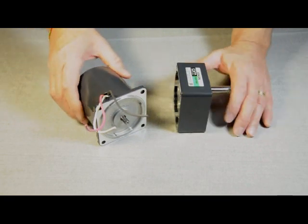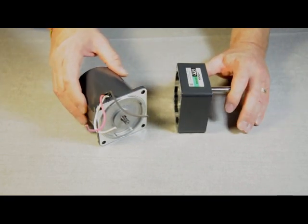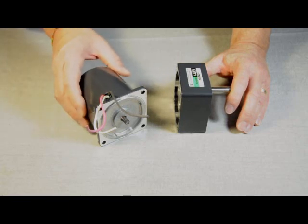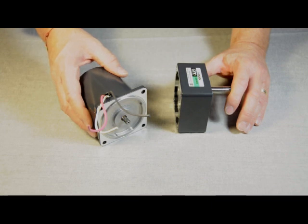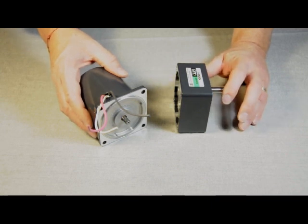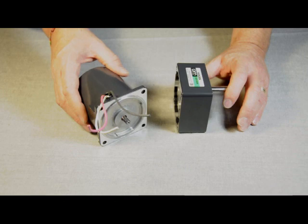This series of motors starts at 1 watt and goes up to 200 watts, so just over a quarter horse. On the largest motor and the biggest gear head, we can provide up to 550 pound inches of torque, and it's one of the smallest quarter horse motors on the market today in the induction series.